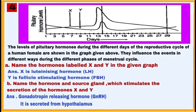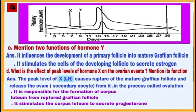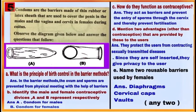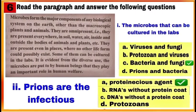Here are questions A, B, C, and D for the fourth case. Case 5 provides information about condoms used by males and females to prevent unwanted pregnancies.